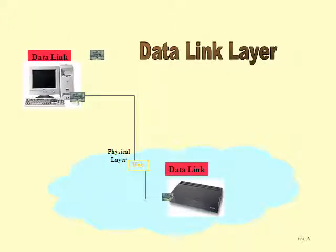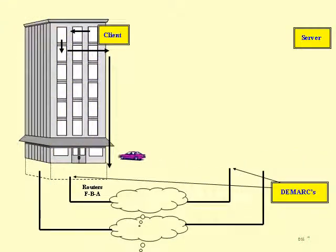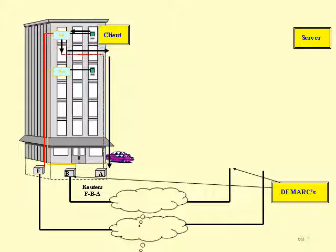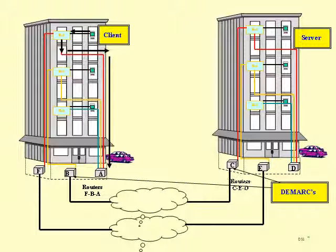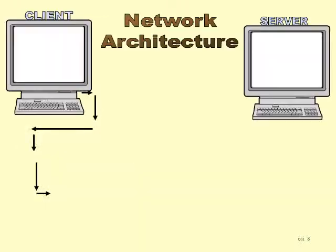This is what it physically looks like. The connectivity piece of hardware is a network interface card. On the client there's one network interface card, and going into the router there's another network interface card, and in the middle — rather than the switch shown earlier — here is the hub going from the client down to router A. This is the physical link: the hub is on the third floor, there's the client, and router A is down in the basement of the building.